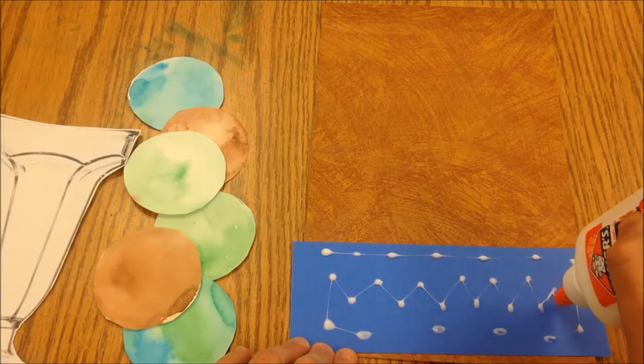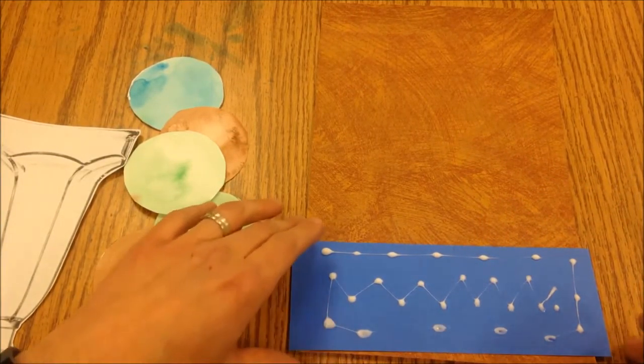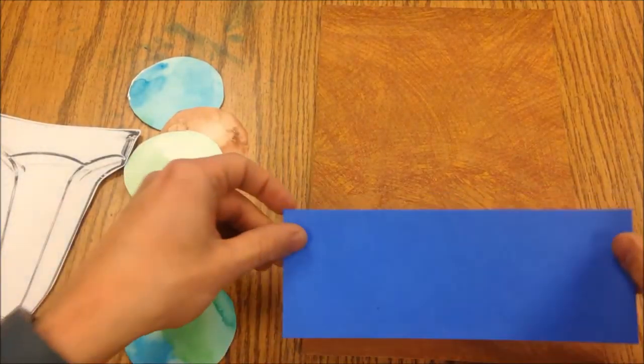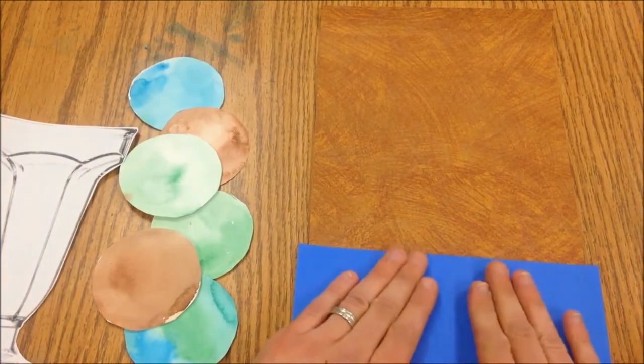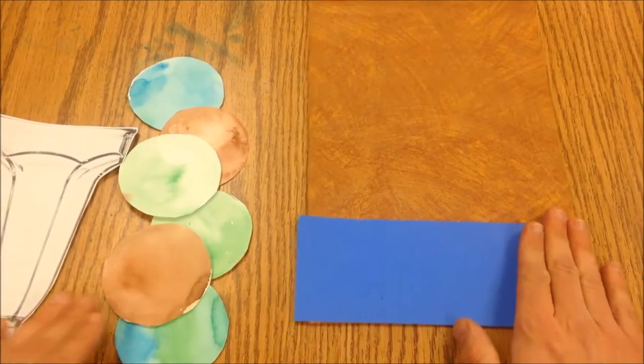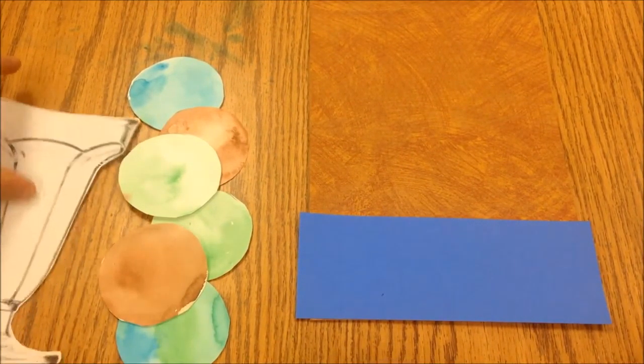So we don't want big globs of glue. Then I'm going to turn this over and line it up right with the bottom of that paper and press it with my fingers.